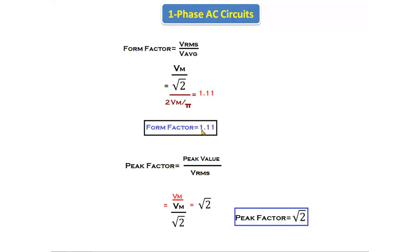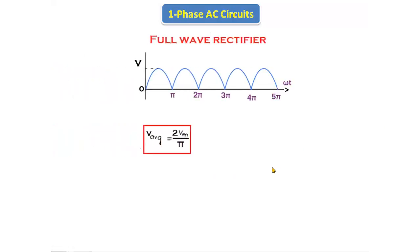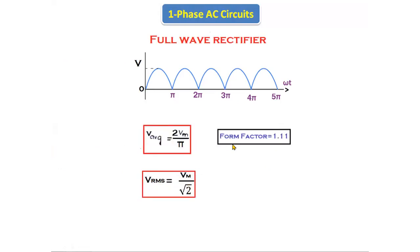The form factor and peak factor give useful information: form factor = 1.11 means V_rms = 1.11 × V_average, and peak factor = √2 means V_peak = √2 × V_rms. To summarize: for the full wave rectifier, V_average = 2Vm/π, V_rms = Vm/√2, form factor = 1.11, and peak factor = √2.